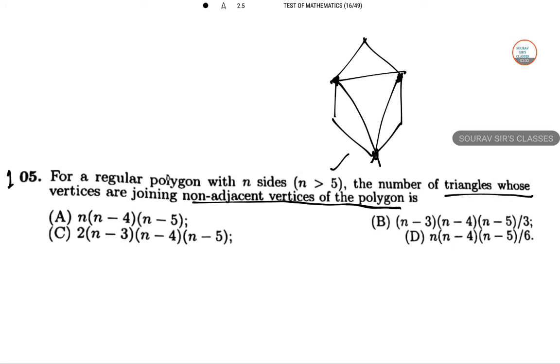So let's count the triangles. Number of triangles with 2 consecutive vertices and 1 non-consecutive vertex is N times (N minus 4). Taking 3 consecutive vertices, the total number of such triangles would be N.